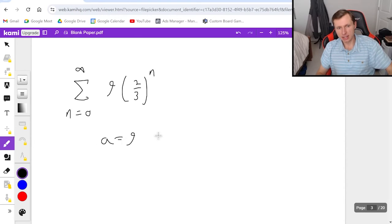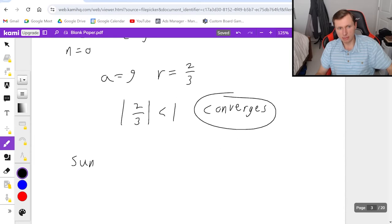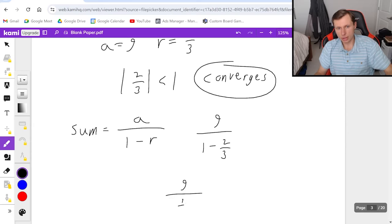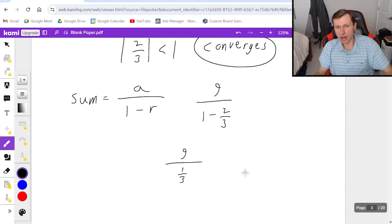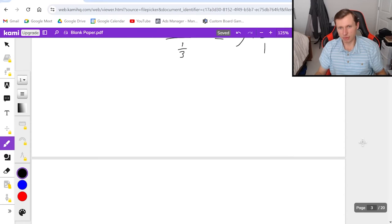So here's what I'm going to say. For this one, a is nine, r is two thirds. So the absolute value of r two thirds is less than one. Great. Then that means we are converging. And if I want to find the sum now, the sum is equal to a divided by one minus r. So it's going to be nine over one minus two thirds, which is nine over one third. Now, that's a complex fraction. So make sure you multiply by the reciprocal and that will get us a sum of 27. And that's the sum for the series. Great. That's it for the first one.